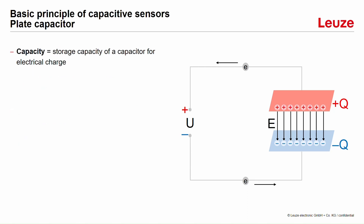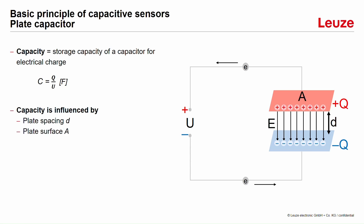What is the capacity? The capacity is the storage capacity of a capacitor for electric charges. The physical formula is charge per voltage. And the capacity is influenced by the distance between the plates, the surface of the plates, and also by the dielectric constant of a material that is inside the capacitor.